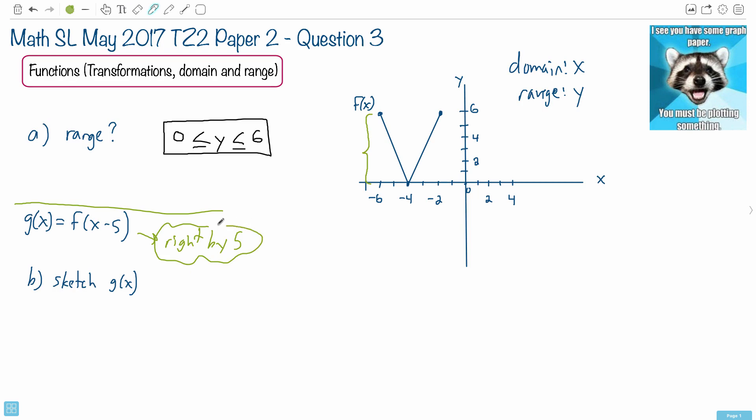So you had to recognize that this is a transformation. And you had to know that anything happens in the bracket, if you have an x plus five, you'd think, oh, it should go to the right by five, right? But actually, no, it should go to left.